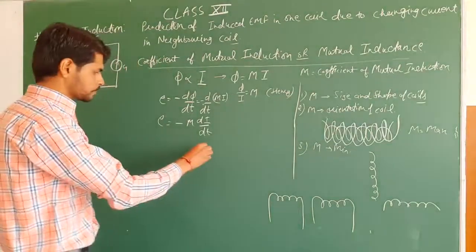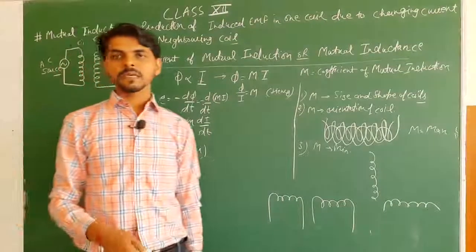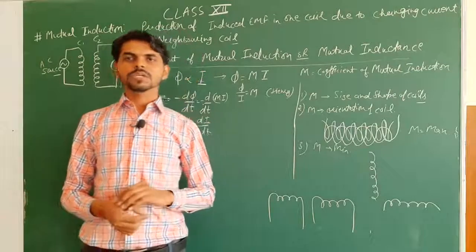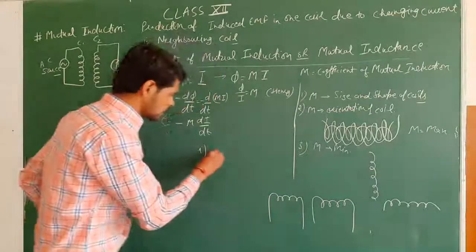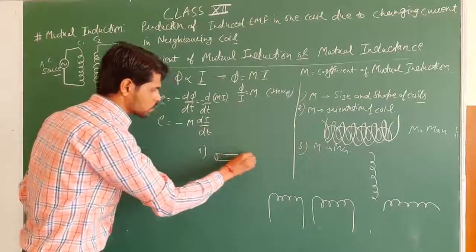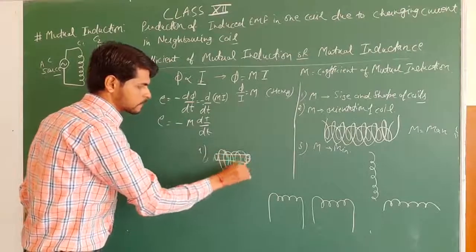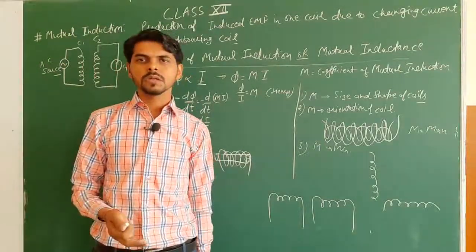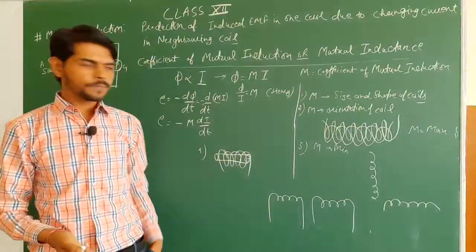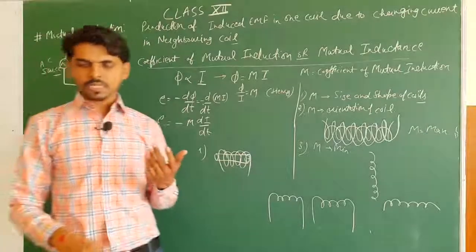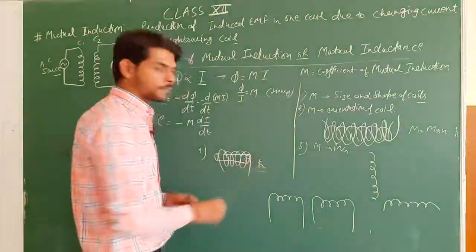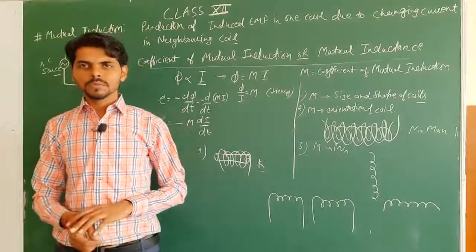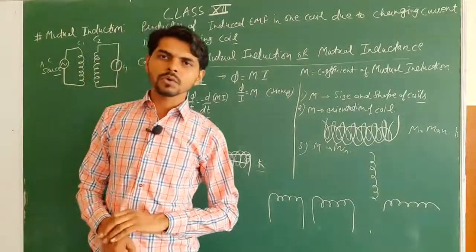The next factor: if we wind these coils on a soft iron core, mutual inductance will increase further. When an iron rod is placed inside and the coil is wound over it, more magnetic field is produced, so more magnetic flux is produced, more flux is linked, and so the coefficient of mutual induction increases — by a factor equal to the relative permeability of the soft iron core.